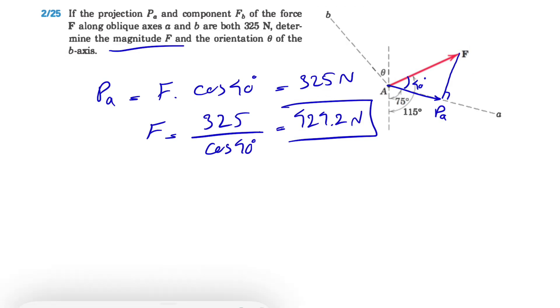The other information we have is that Fb is also 325 Newtons. Let's show Fa and Fb. To find these, we draw a parallel line with a and a parallel line with b. This will be our Fa, and this will be our Fb.